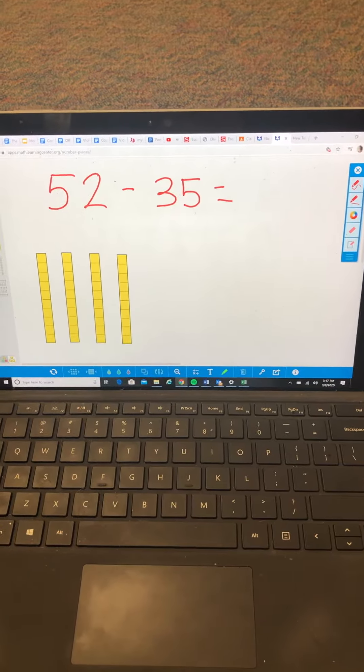52 minus 35 is equal to, they can draw this. So 52 would be 10, 20, 30, 40, 50, 51, 52.